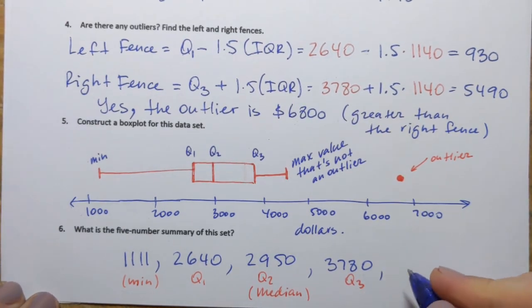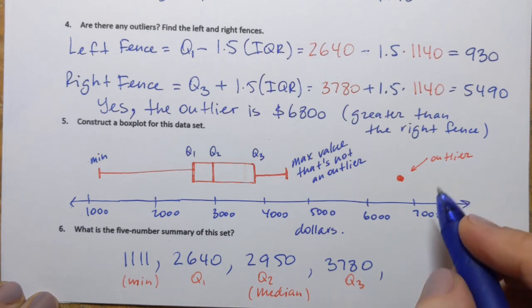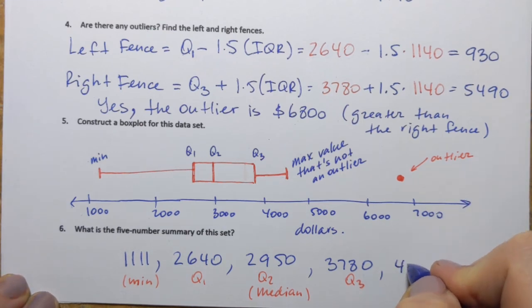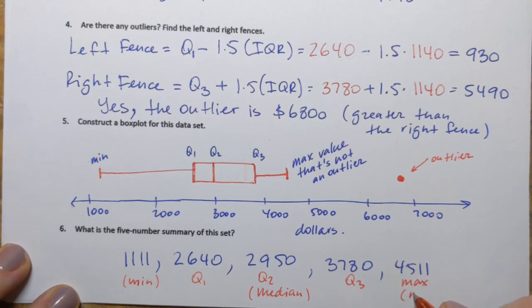And then the maximum value, but again, the one that's not an outlier. So that's 4,511, maximum value, not an outlier.